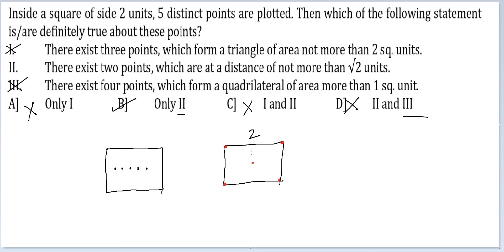If the side of the square is 2, the length of the diagonal will be 2 root 2. So if you place it anywhere else, it is going to be closer to one of the points, and then the distance will be less than root 2.